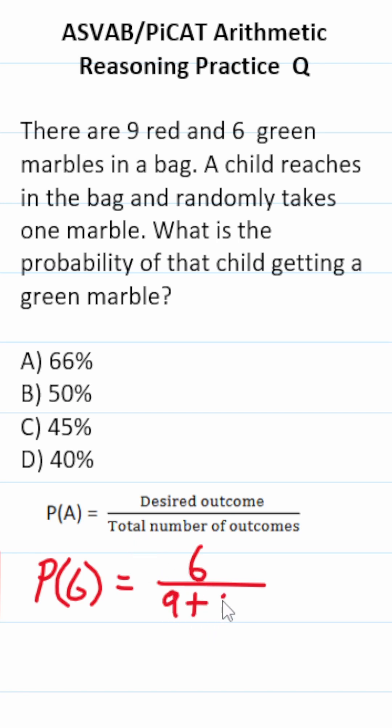There are 9 red and 6 green in the bag. So the probability of getting a green one is going to be 6 out of 9 plus 6, which is going to be 15.